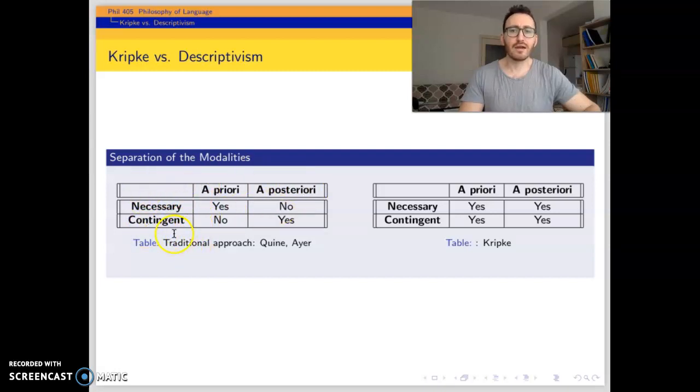For that reason, there is no possibility of contingent a priori propositions or existence of this category and necessary a posteriori propositions. So there cannot be contingent a priori or necessary a posteriori propositions for the traditional approach.